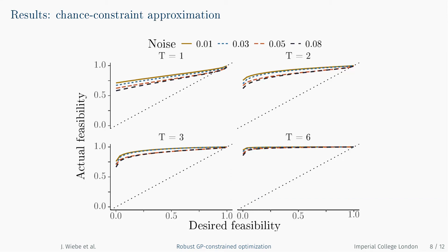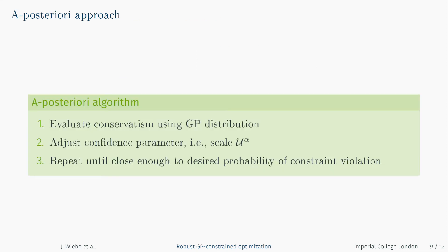The first results show a comparison between the confidence value used to construct the uncertainty set and the probability of constraint violation evaluated using the true underlying data generating distribution. Ideally, the actual feasibility would be equivalent to the desired feasibility, indicated by the dotted line. Our approach is a conservative approximation to the chance constraint. One disadvantage is that with increasing dimension t of the uncertainty set, the approximation becomes more conservative. To alleviate this, we have developed an a posteriori algorithm which evaluates the conservatism of the solution using the Gaussian process distribution and adjusts the confidence parameters accordingly to get closer to the desired probability of constraint violation.